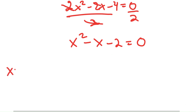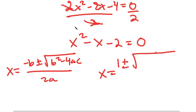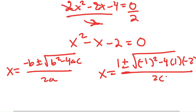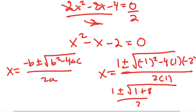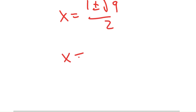To solve this I'm going to use the quadratic formula: negative b plus or minus the square root of b squared minus 4ac, all over 2a. So x equals negative negative 1, which is positive 1, plus or minus the square root of negative 1 squared minus 4 times 1 times negative 2, all over 2 times 1. This gives 1 plus or minus the square root of 1 plus 8 over 2, which is 1 plus or minus the square root of 9 over 2, meaning x equals 2 and x equals negative 1.